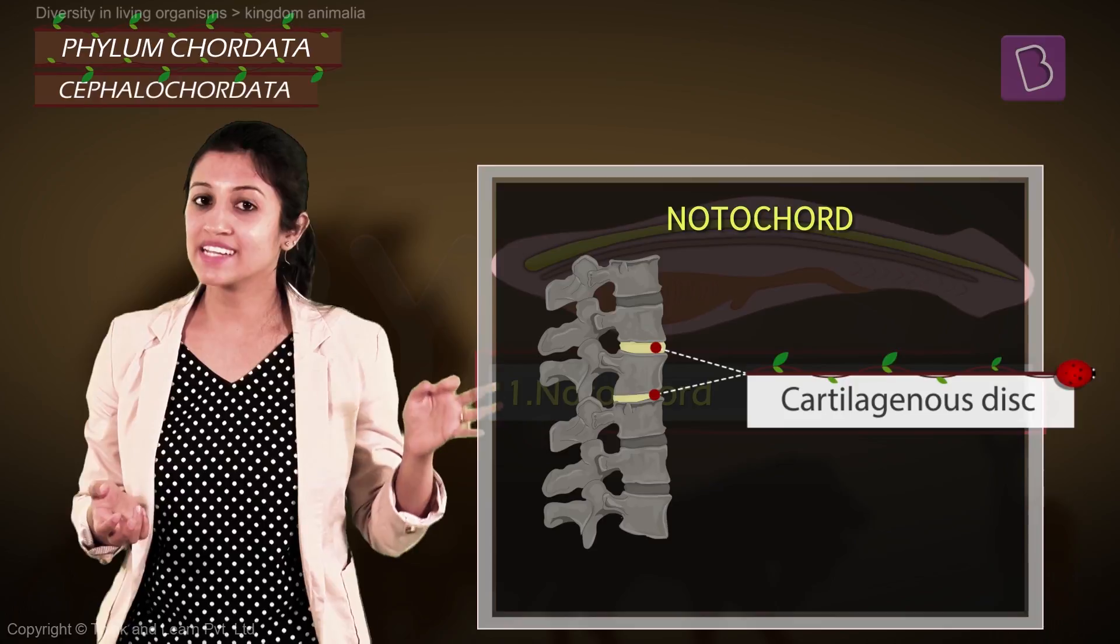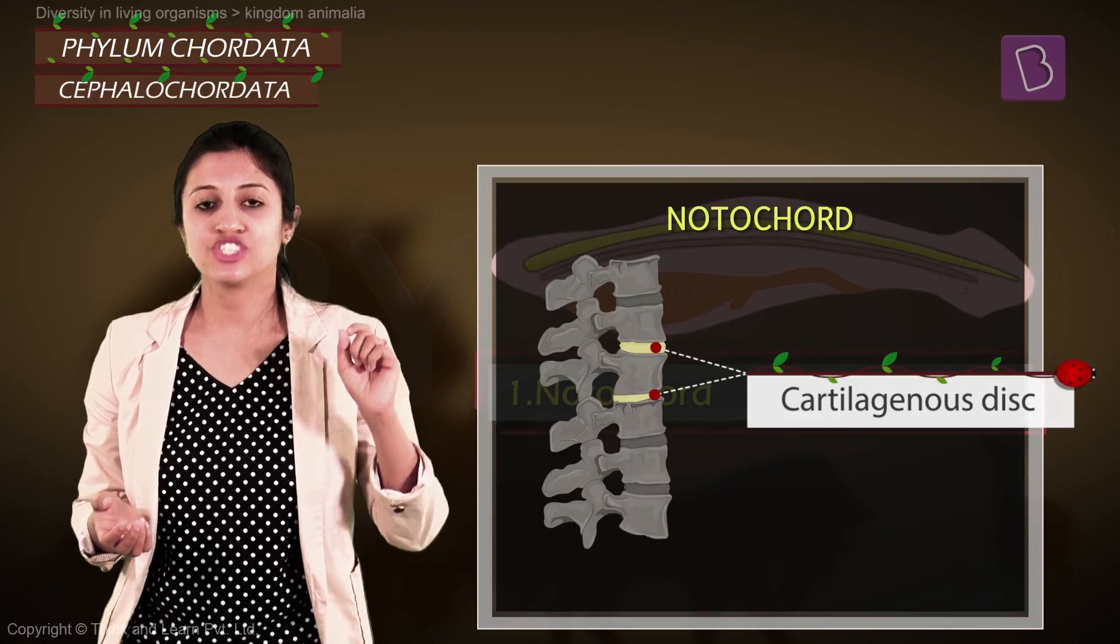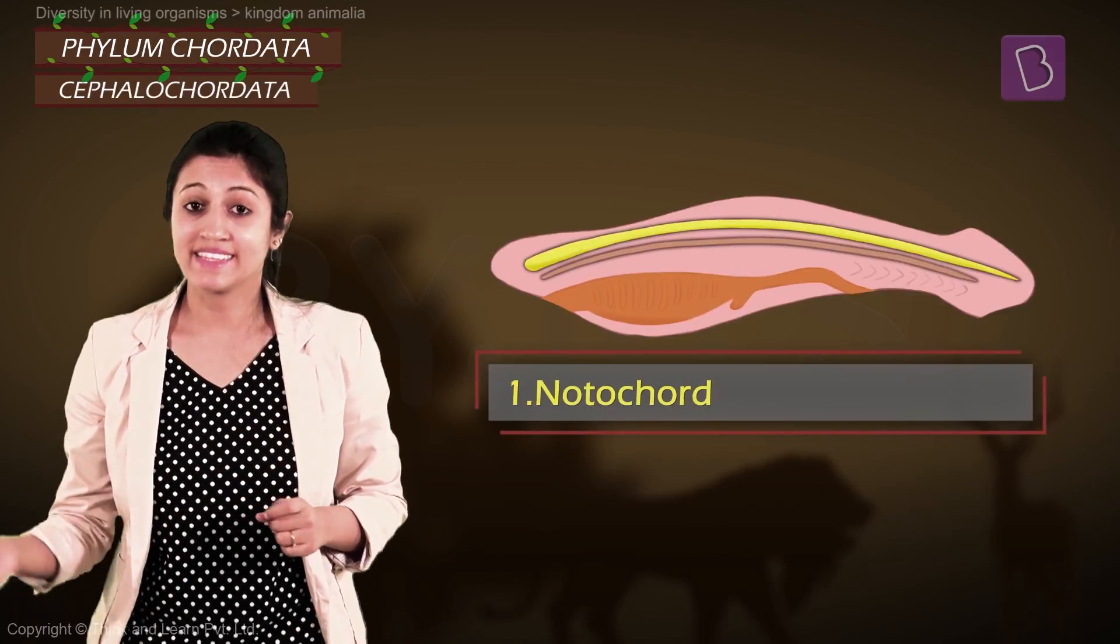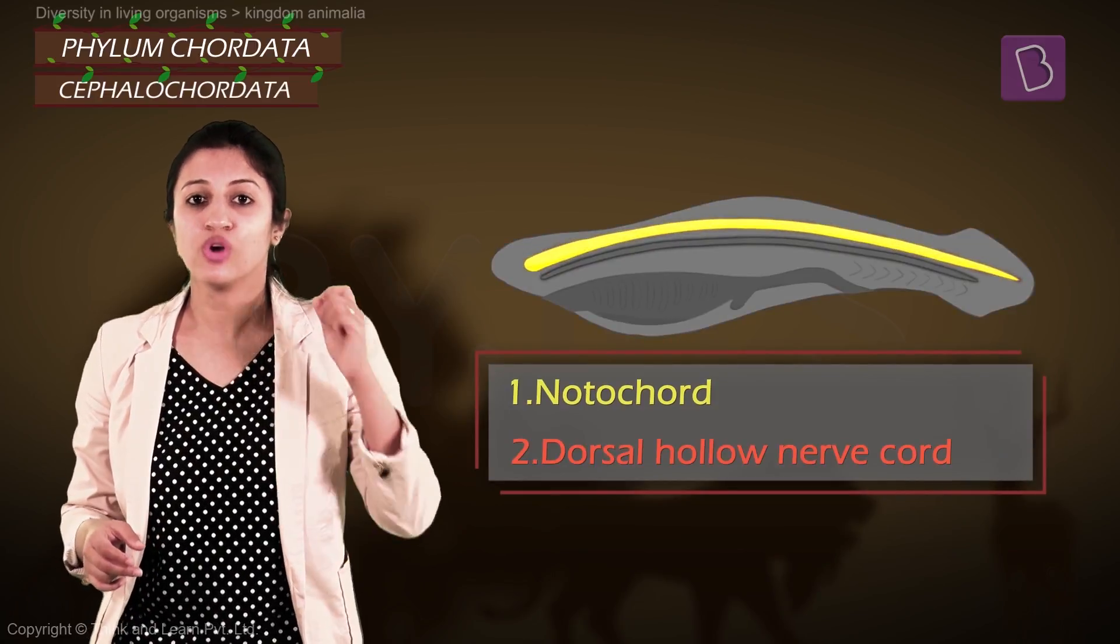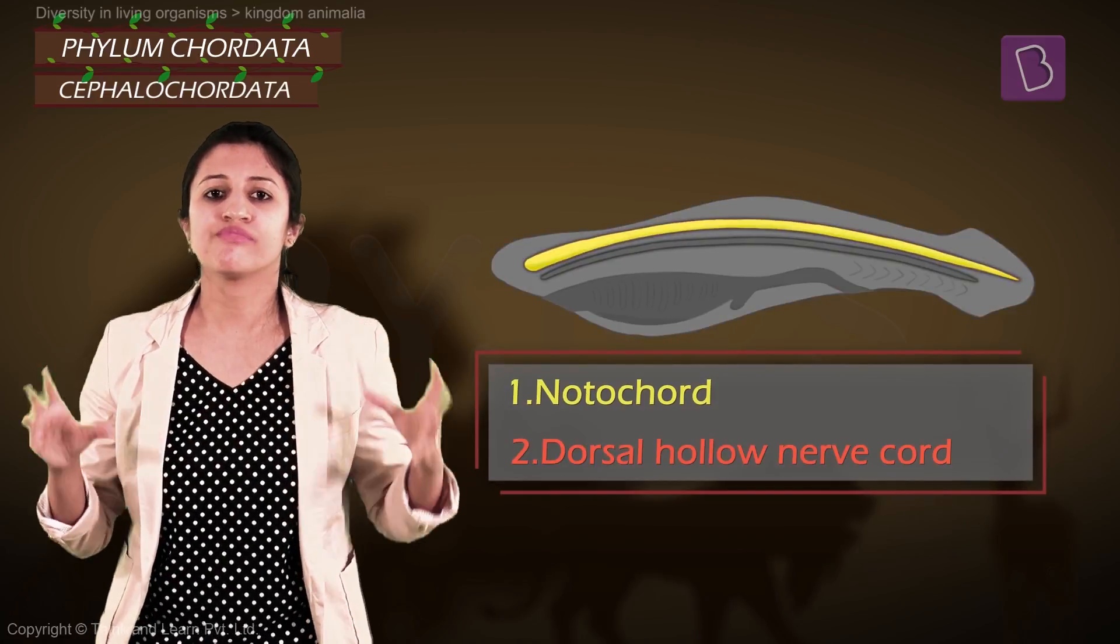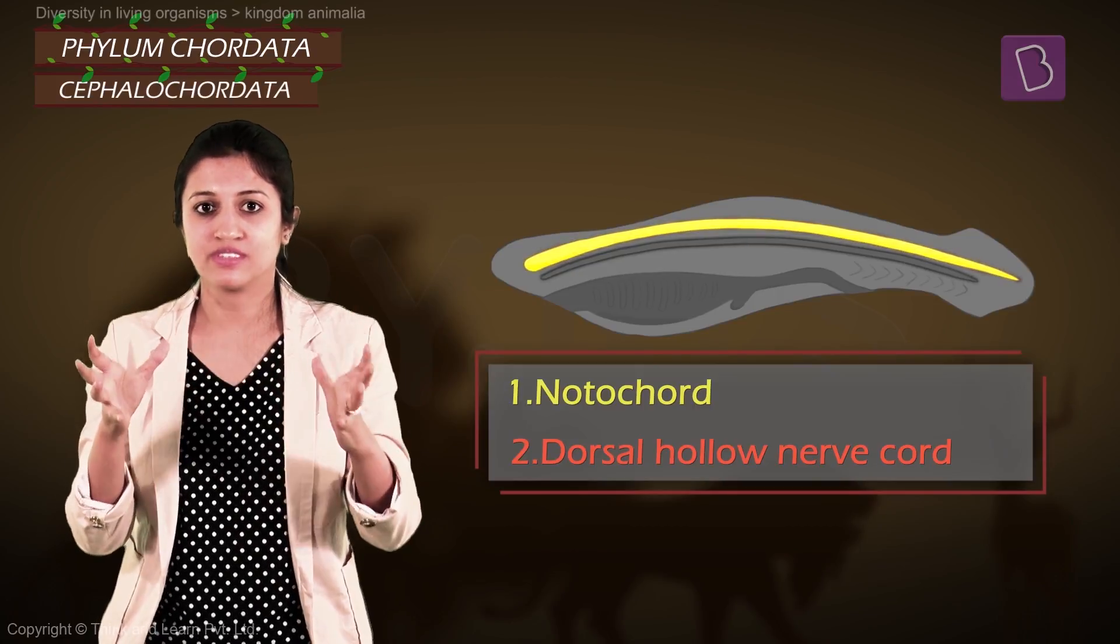But it's reduced to these cartilaginous discs that are there just above the vertebra. And then you have the nerve cord called the dorsal hollow nerve cord filled with nerve fibers that develops into the nervous system.